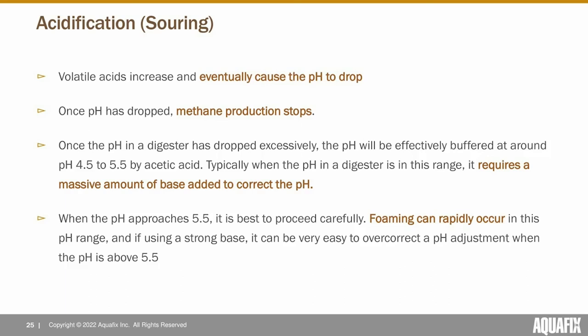Watch out for the 4.5 to 5.5 pH range — it's a buffered zone, so you'll end up adding a very disproportionate amount of base once you hit that region. Once the pH gets above 5.5, if you're using a strong base like sodium hydroxide, proceed cautiously because it's very easy to over-correct since you're no longer in the buffered region. You don't want to raise the pH up to 9 or 10 — you want to get it as close to 7 as possible.